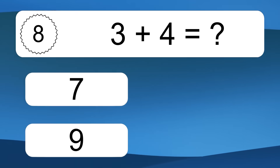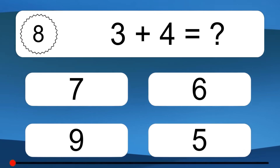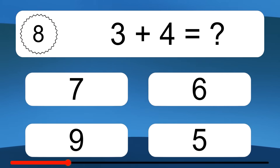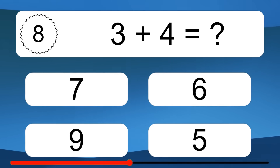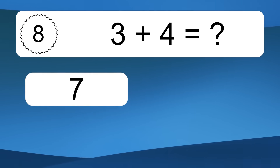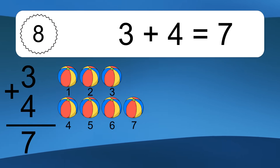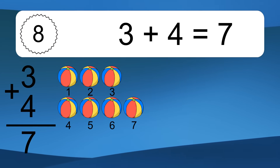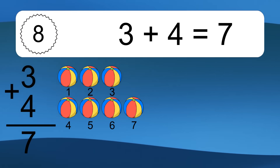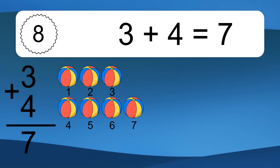3 plus 4 equals what? 3 plus 4 equals 7. Let's count it: 1, 2, 3, 4, 5, 6, 7.